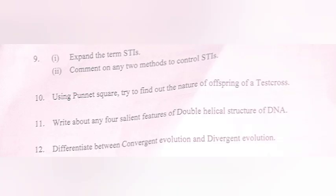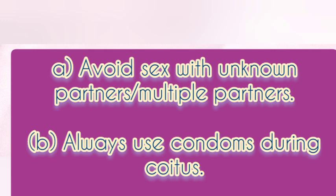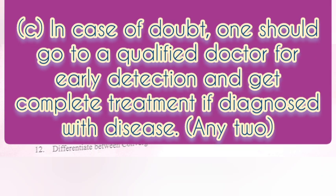Question 9. Part 1: Expand the term STIs. Answer: Sexually Transmitted Infections. Part 2: Comment on any two methods to control STIs. Answer: Avoid sex with unknown partners or multiple partners. Always use condoms during coitus. In case of doubt, one should go to a qualified doctor for early detection and get complete treatment if diagnosed with a disease.